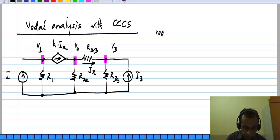If I write for node 1 the currents flowing away from the node, I will have V_1 times G_11 through this resistor plus k times i_x through the controlled source to be equal to I_1, the independent source injected into node 1.